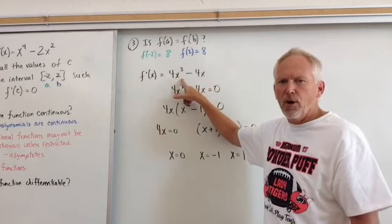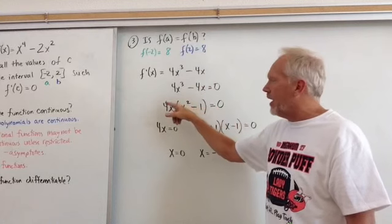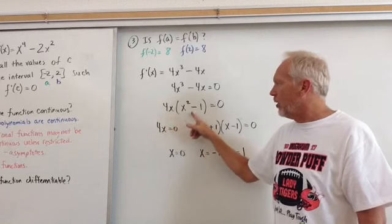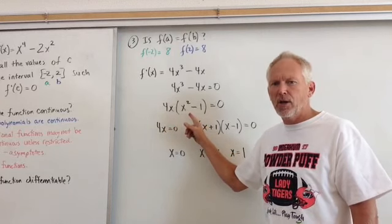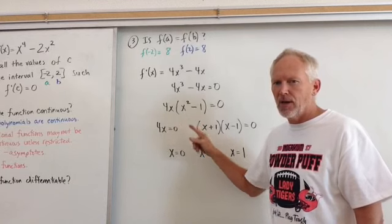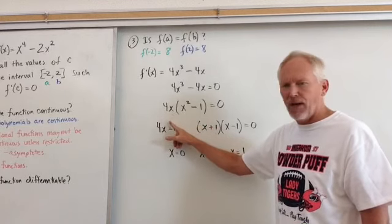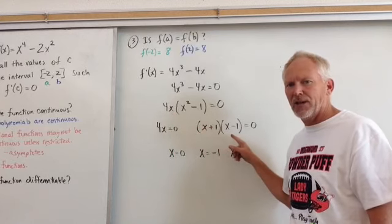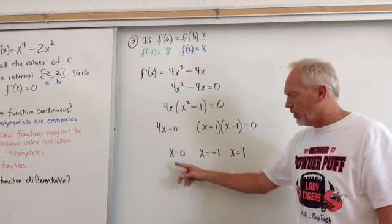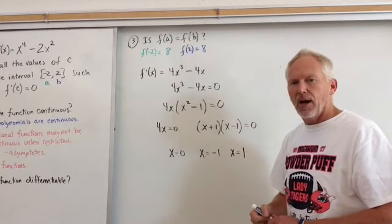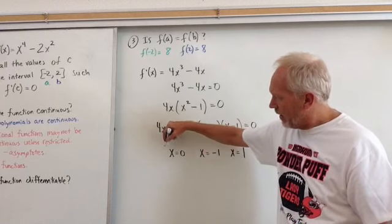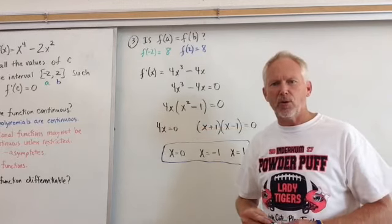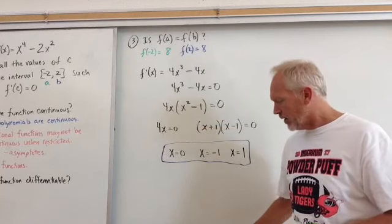Take the first derivative, 4x cubed minus 4x. We can set it equal to zero. We factor out a 4x. We notice that inside is left x squared minus 1, which is a difference of two squares. Then I will set 4x as a factor equal to zero, and then these two factors, x plus 1 and x minus 1, those equal to zero. And so the three c values that we get are x equals zero, x equals 1, and x equals negative 1.